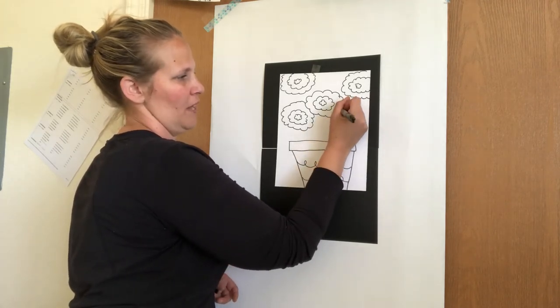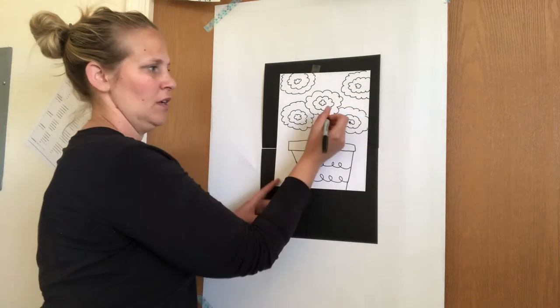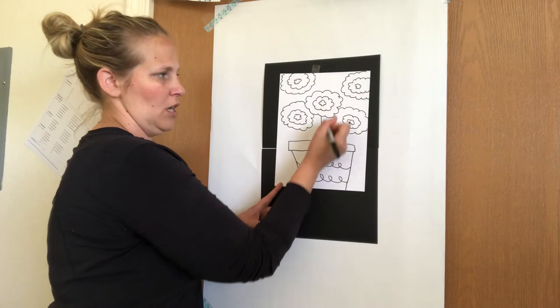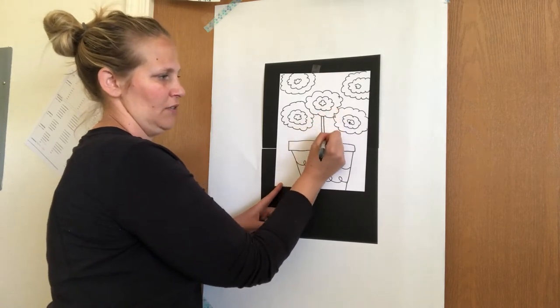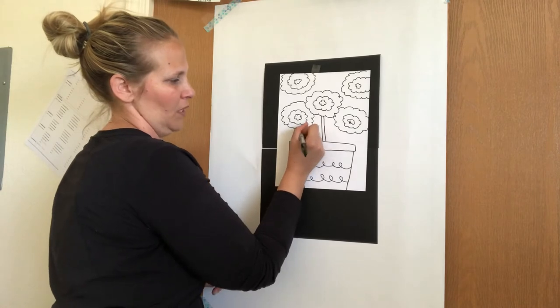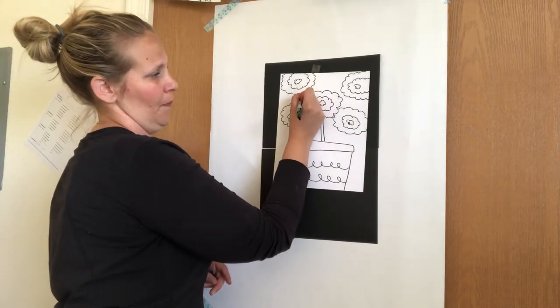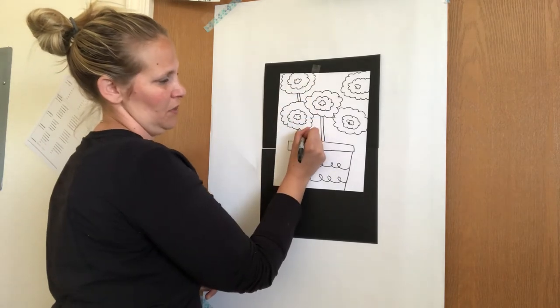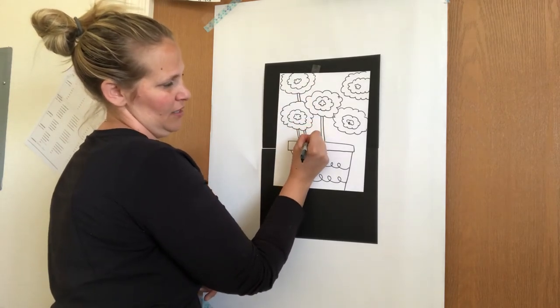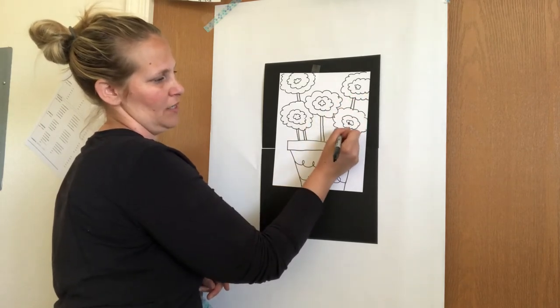Now once I have all my flowers that's when I'll do my stems. I'll just do a long stem from the middle of my flower to my pot and that might be, I might have to stop and jump. Don't forget to get that flower stem in your pot.